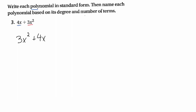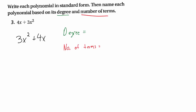Now that it's in descending order, we count the number of terms and look at the degree. The degree of a polynomial is the highest power on any variable. Here, 3x² has degree 2 and 4x has degree 1. We do not add these degrees because they're separate terms. The highest exponent is 2, and there are two terms — so this is a second degree binomial.